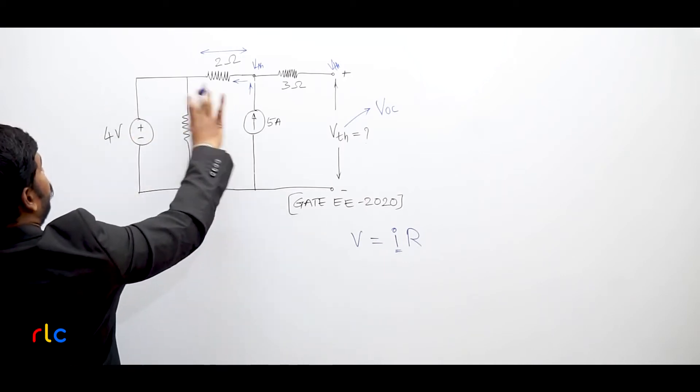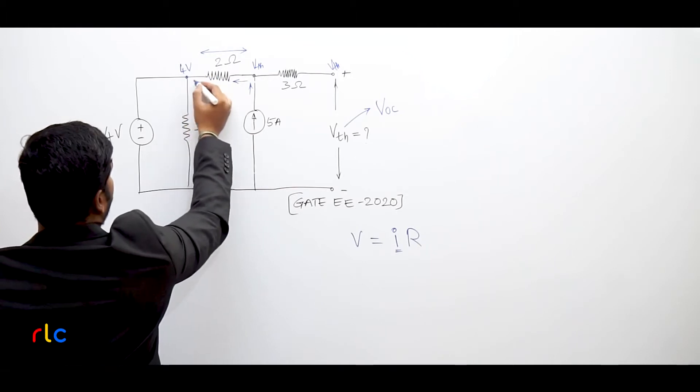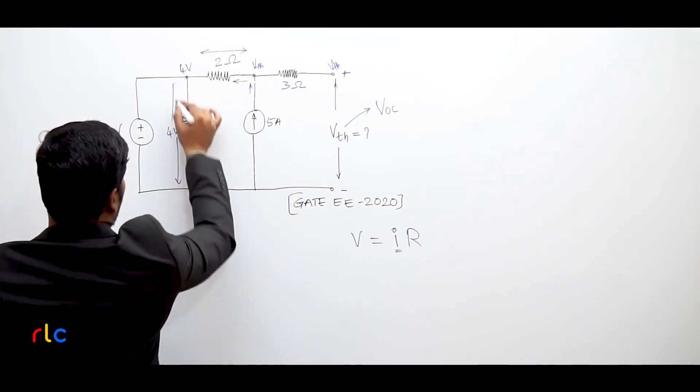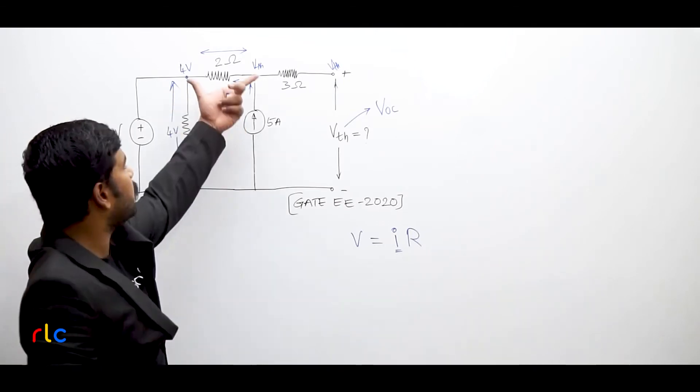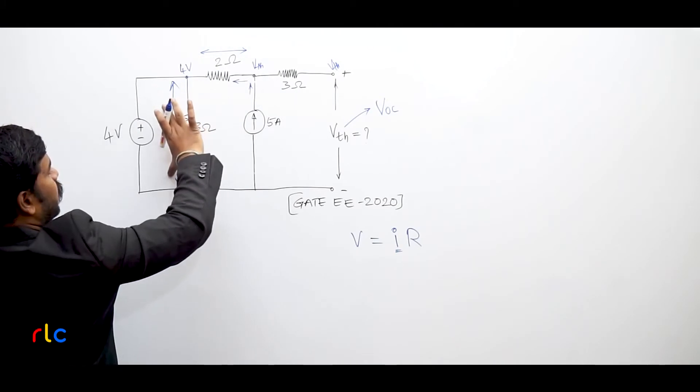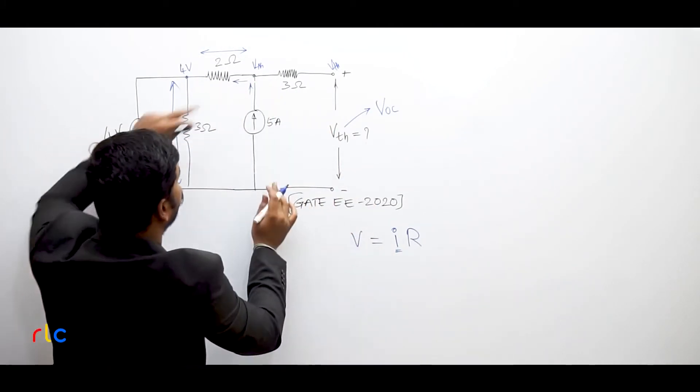Now you see here, 3 Ohms is connected to 4 volt source. So here the voltage is 4 volts. So I can say voltage drop across 3 Ohms is 4 volts. So if I can sum up voltage drop across 2 Ohms and this 4 volts, that is only going to be your VTH. This is the VTH voltage.